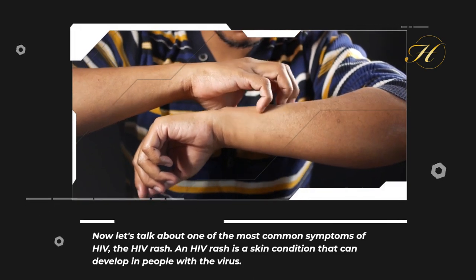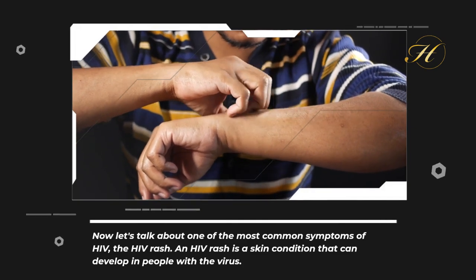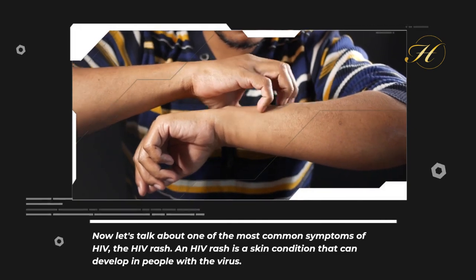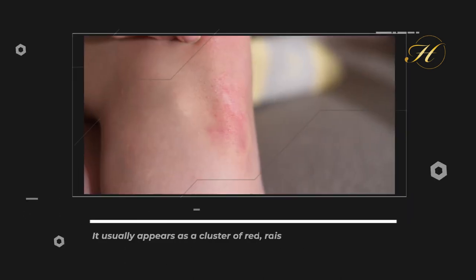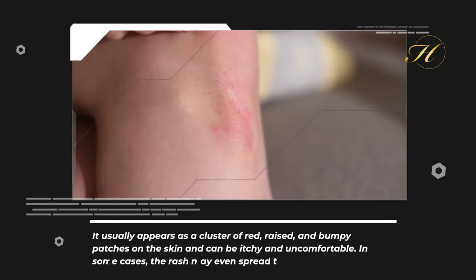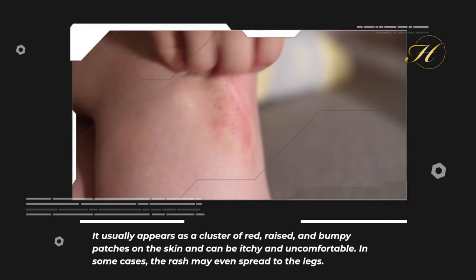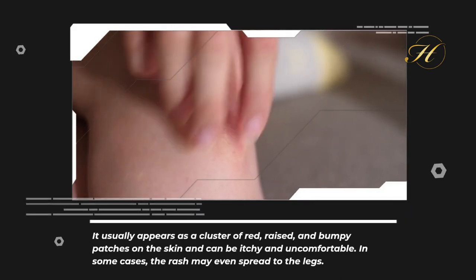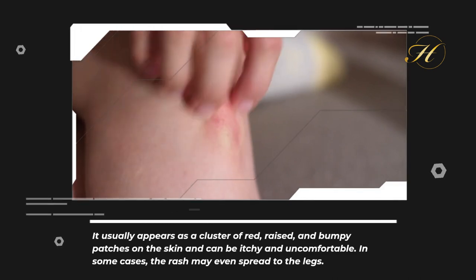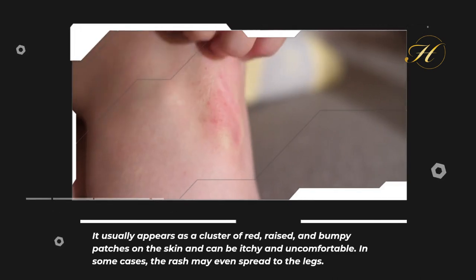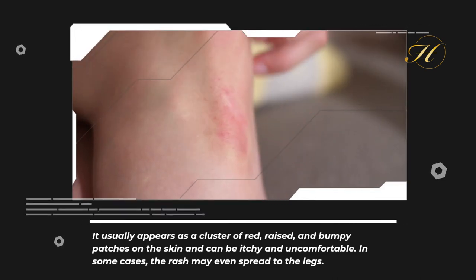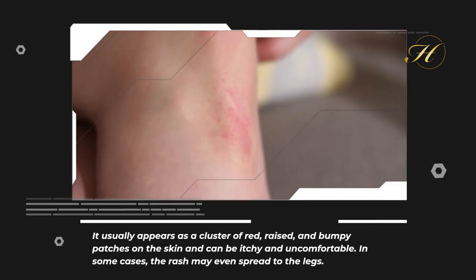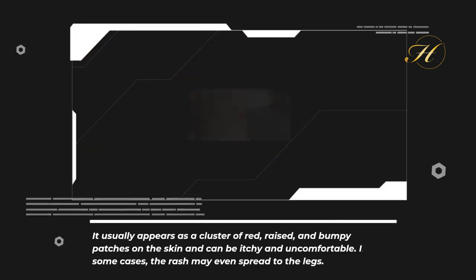An HIV rash is a skin condition that can develop in people with the virus. It usually appears as a cluster of red, raised, and bumpy patches on the skin and can be itchy and uncomfortable. In some cases, the rash may even spread to the legs.